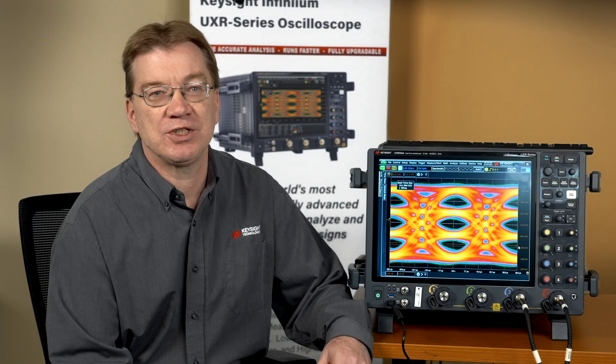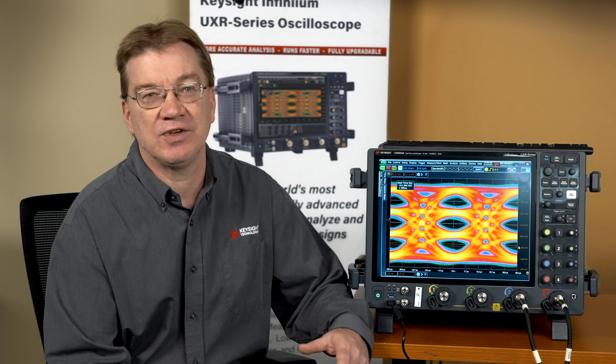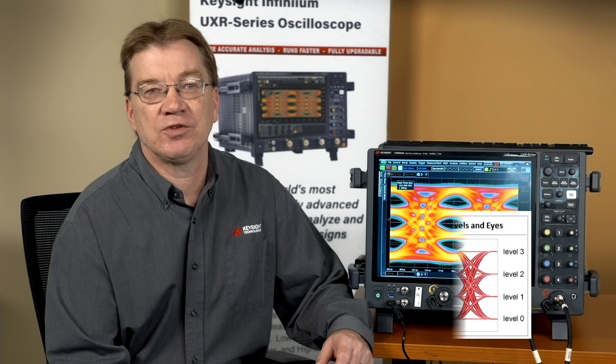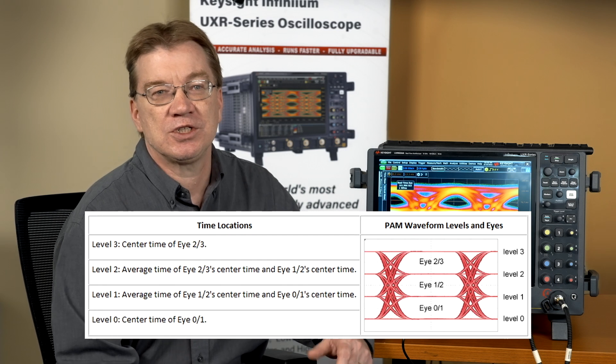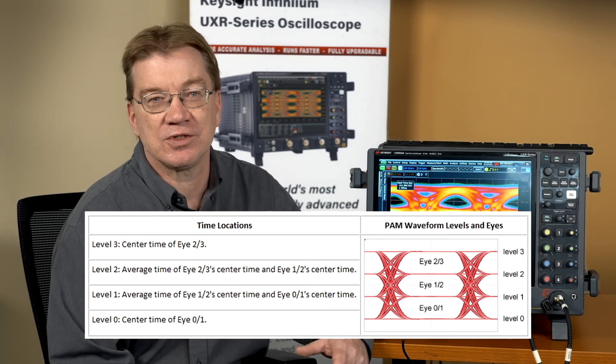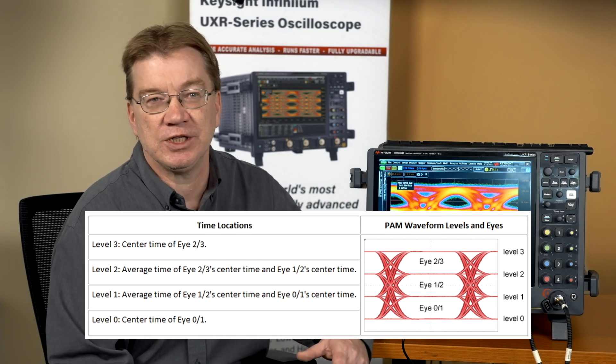PAM Pulse Amplitude Modulation signals use more than the high and low levels of NRZ, non-return to zero, to achieve greater throughput with the same baud rate. For example, PAM-4 uses four levels, where each level represents two bits of data. Because the signal-to-noise ratio of PAM signals is lower, they are more susceptible to noise, and this becomes a key factor when doing PAM analysis.